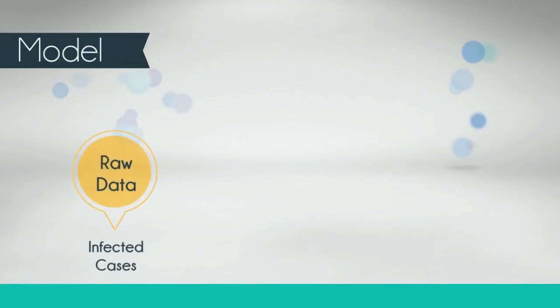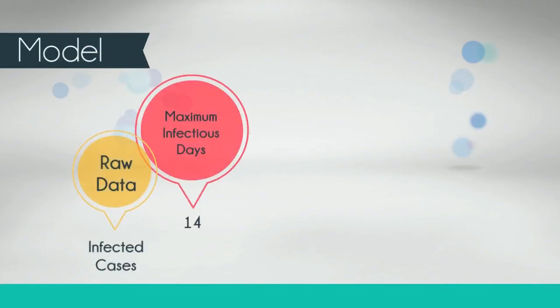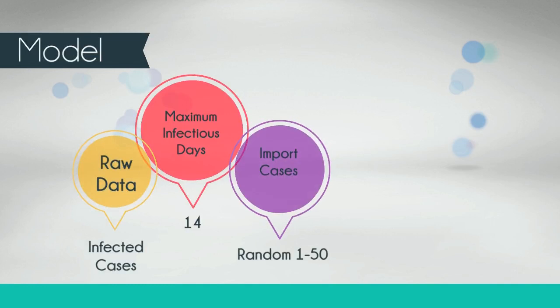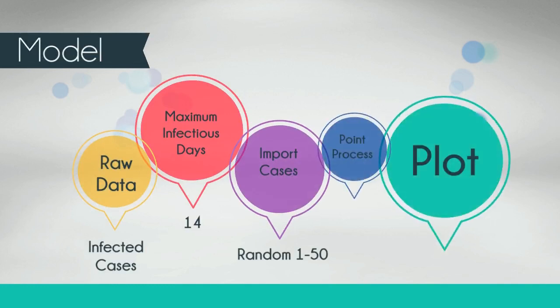The flowchart of the model is: get the raw data first, then set up the maximum infection period to 14 days, and set up the random imported cases, then apply everything to the mathematical model we built, then plot the data and get the final result.